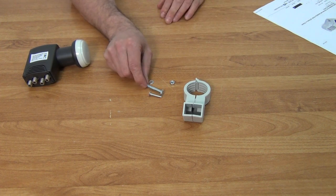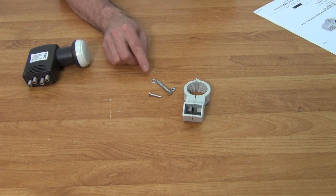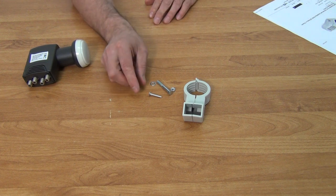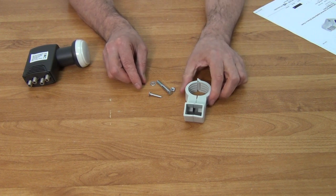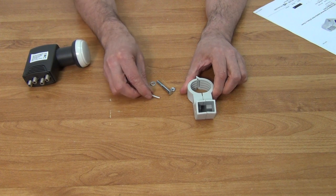In the little bag that you get with this there'll be the following: there'll be a bolt here with a nut and a washer and there'll be a screw as well.